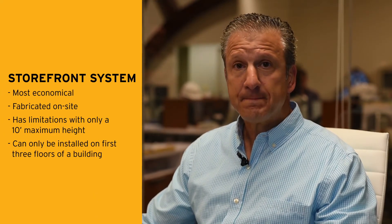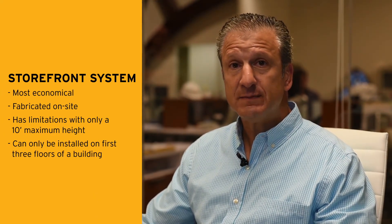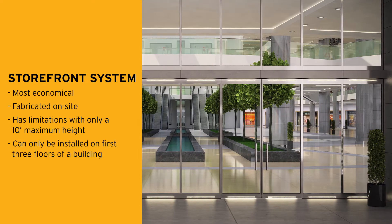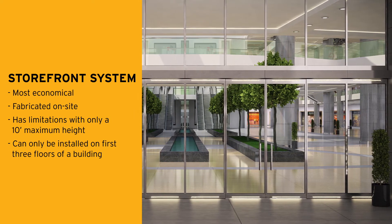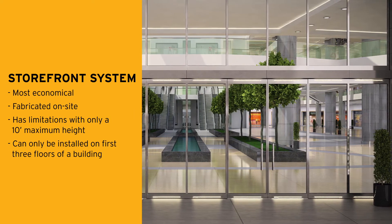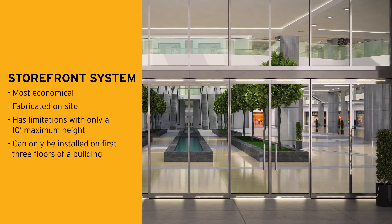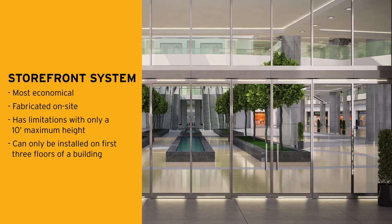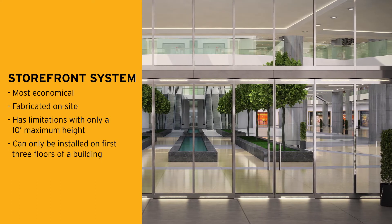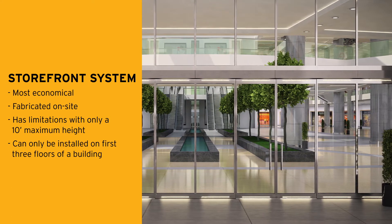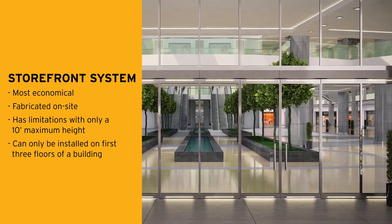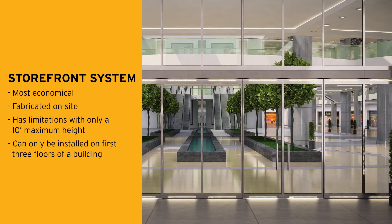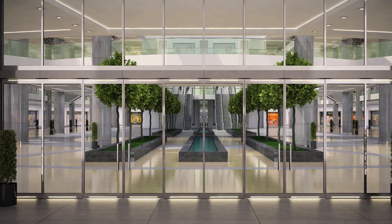Starting out with the storefront: the storefront is the most economical of the three. It is a field fabricated system and it has its limitations. It can only go up to 10 feet high and it can only be installed on the bottom three floors of a building, which has to do with the wind load presented onto the system. Storefronts are built from the floor slab up to a header or soffit, and the storefront is supported around the perimeter of its system.